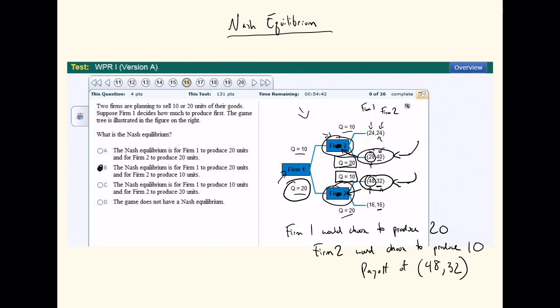The way that we found that was we put ourselves first in firm two's shoes. We solved backwards to see what firm two would do in this node and what firm two would do in this node. And then based on what firm two would do, we then put ourselves in firm one's shoes and decide what's the best rational option for firm one. And again, it leads to this solution, which is answer B. And until next time, it's been MBAs teach econ.